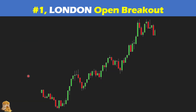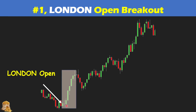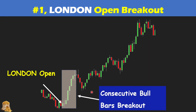Most of the time when you use the London open breakout, you want to scalp because you don't know whether it is a trend day or not. But here is an example where you can do a swing rather than scalp to make more profit. The London opens here and then you see a breakout with consecutive bull bars — this is very good. You can scalp after the pullback.